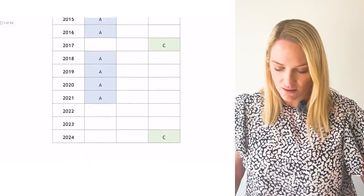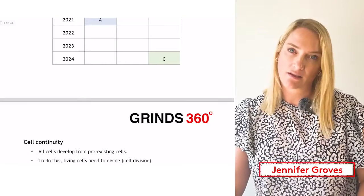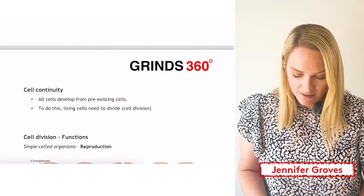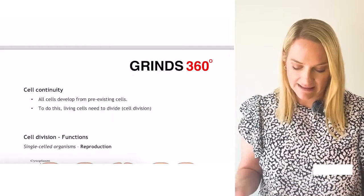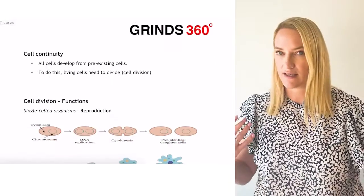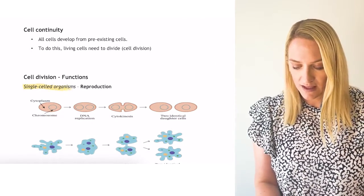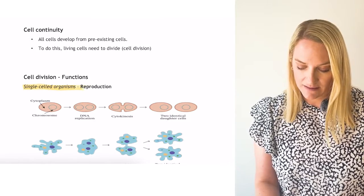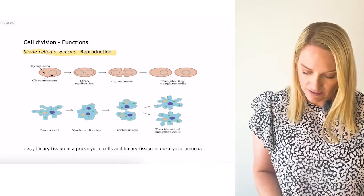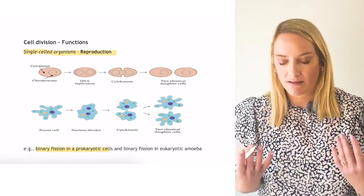Cell division comes up an awful lot, and this year in the summer it was a 30-mark question in section C. Cell continuity means that all cells arise from pre-existing cells. To do this, living cells need to divide. The function of cell division in single-celled organisms is reproduction — for example, binary fission in prokaryotic cells is how bacteria reproduce.